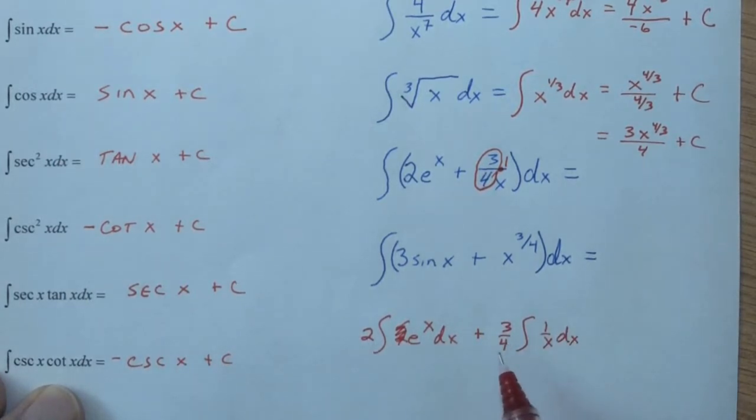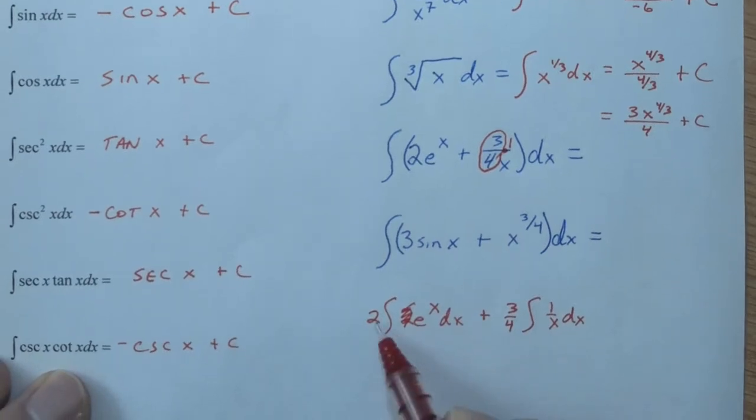Okay, we can move our coefficients out front. We learned this with our definite integral properties a few weeks ago. Okay, so coefficients can travel outside, and then the remaining function stays on the inside. e to the x, anti-derived to e to the x. The 2 is still there, so we have 2 e to the x.